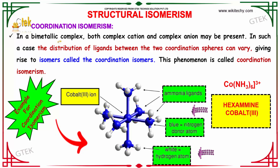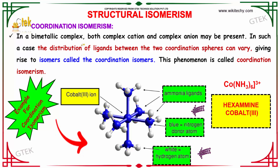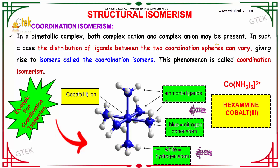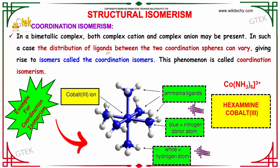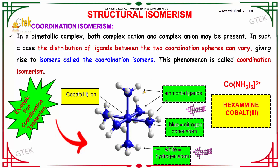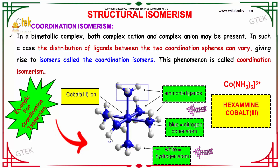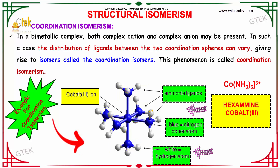Let's move on to coordination isomerism. In a bimetallic complex, both a complex cation and complex anion may be present. In such a case, the distribution of ligands between the two coordination spheres can vary, giving rise to coordination isomers. This phenomenon is called coordination isomerism.